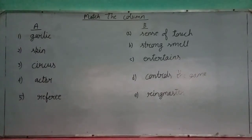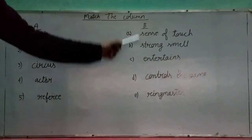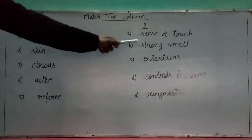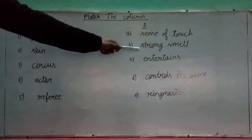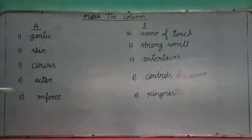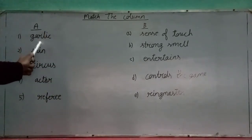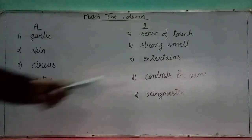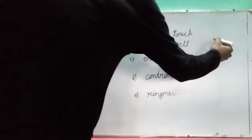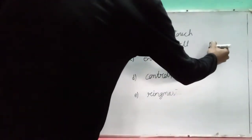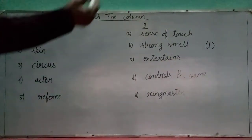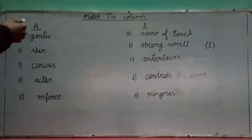First option, first is garlic. Garlic, you can know that it is a type of eatable. In this option, we have to find option B which is related to the food items. So first garlic, this option B. We have to find the answer, first, matching the answer.